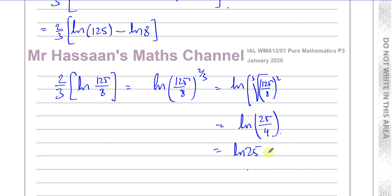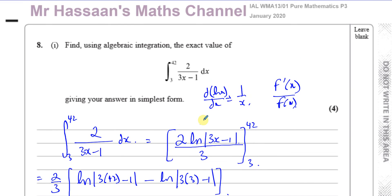Some people prefer to leave answers as whole numbers rather than fractions inside the ln, which is perfectly fine — both forms are acceptable. The mark scheme will show one form but note the other is also okay. So either of these two are perfectly good answers for part 1. Now we're going to go to part 2.